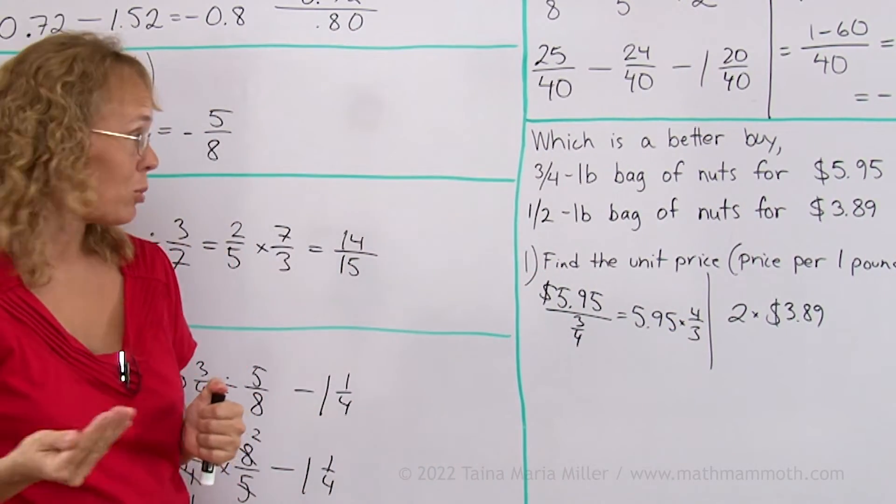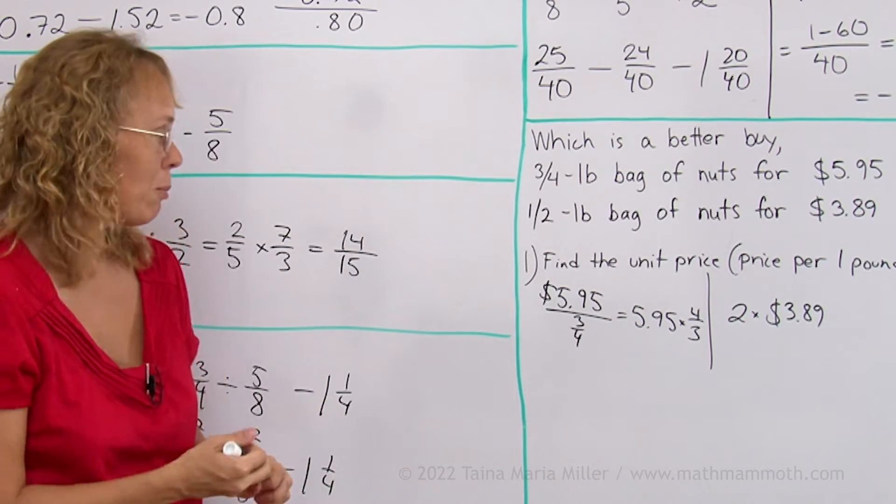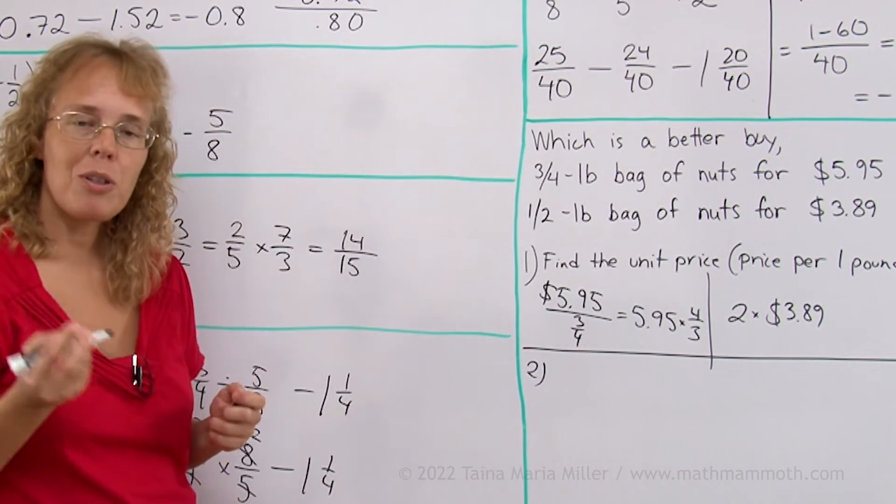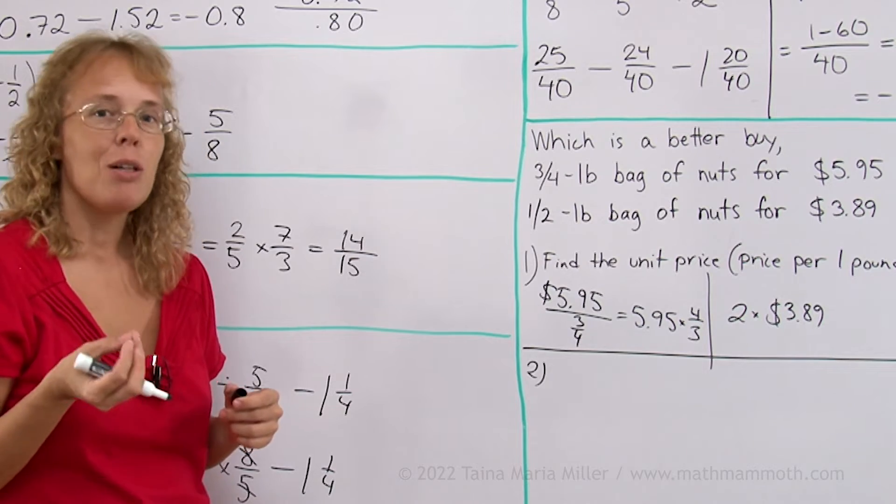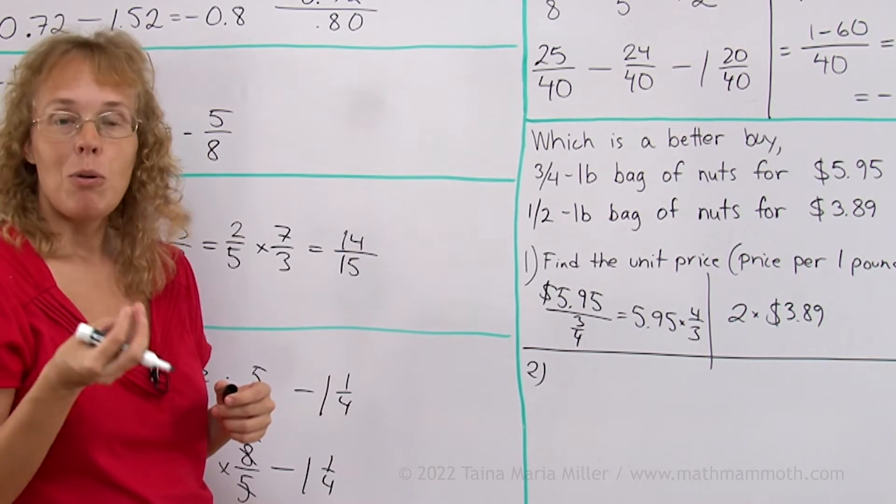Now I want to show you another approach to solving this problem. And that is where we will not find the price per 1 pound. We'll find the price per 1/4 of a pound.